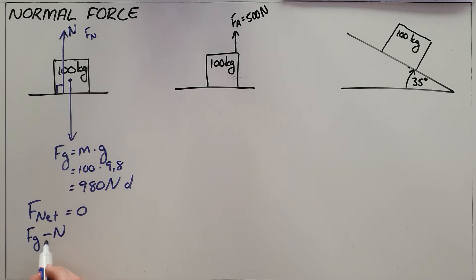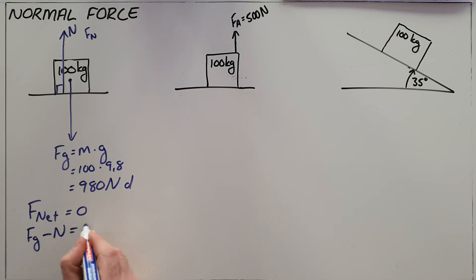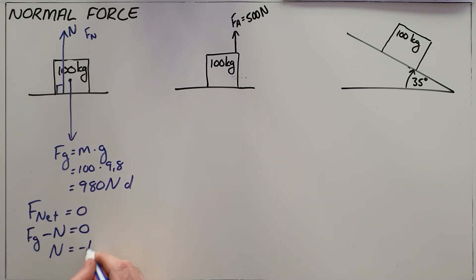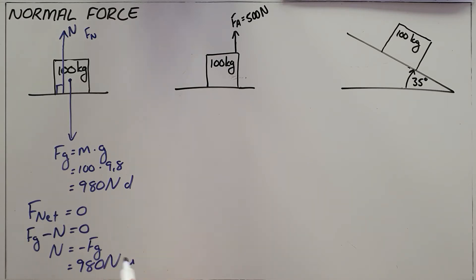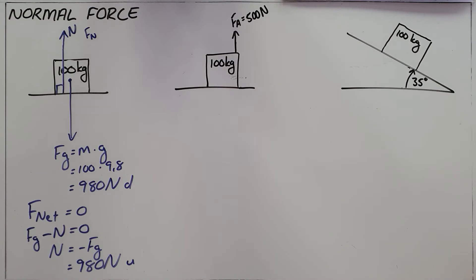This is written as Fg minus N. It is also acceptable to write it as Fg plus N and then take the sign into account at the end of your calculation. Either way, the normal force in this case is equal but opposite to the gravitational force, so the normal force must be 980 Newtons upwards, opposing the gravitational force and stopping the object from sinking into the surface.